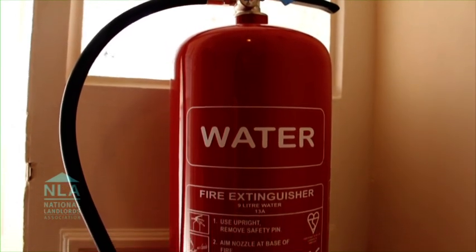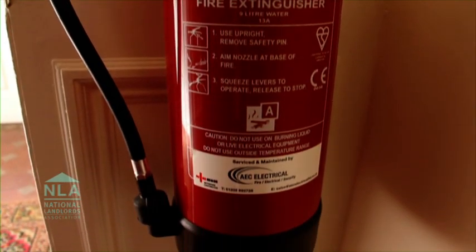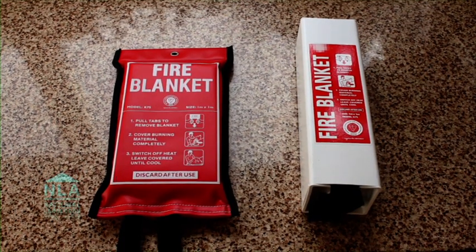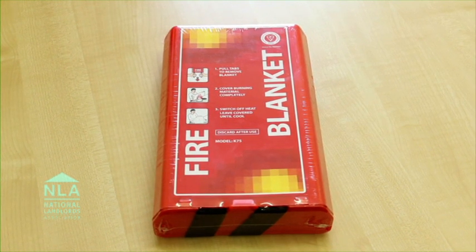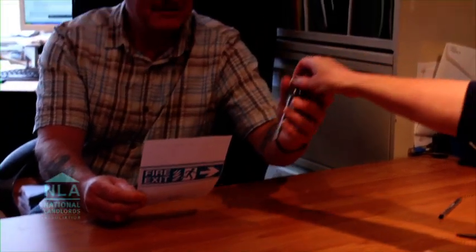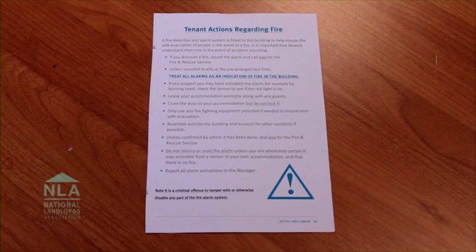Whilst the main message should be the provision of a well-protected property which not only enables occupants to escape quickly and safely, a primary means of firefighting equipment such as fire blankets and extinguishers could also be provided. It's extremely important that tenants are thoroughly briefed about the system when they take a tenancy or if the system is changed. Some landlords include information attached to the tenancy agreement and get a signature that it has been explained. Additionally, it's good practice to display a clear sign informing tenants what to do in the event of a fire, and the NLA logbook has an example you can use.